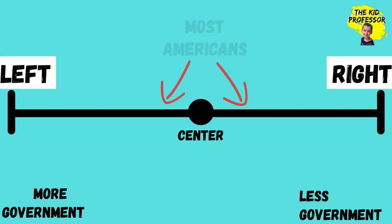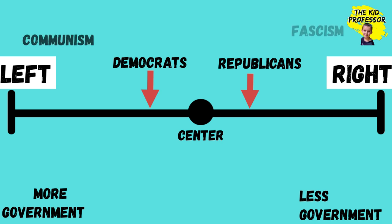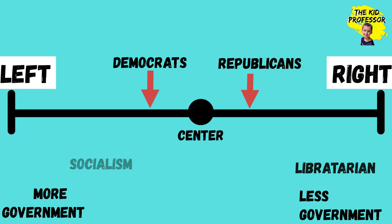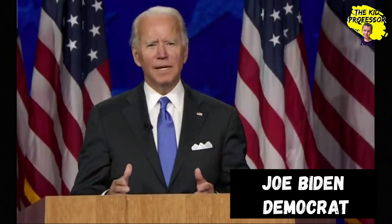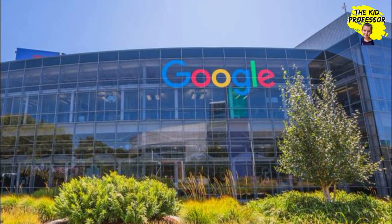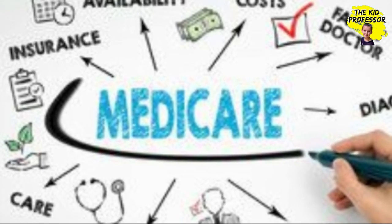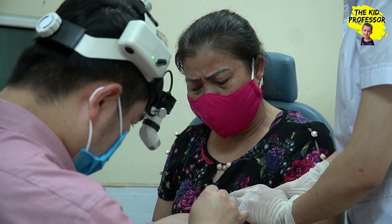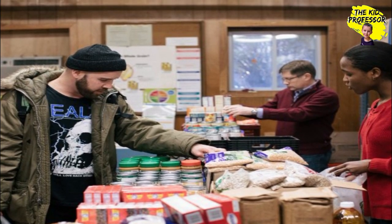Traditionally, Democrats can be found just to the left of center and Republicans just to the right. There are many other political ideologies to the left of Democrats and right of Republicans, but they are often seen as too radical to win elections here — their ideologies too unbalanced to be effective. Democrats believe government should play a bigger role in helping Americans live their lives. They want more government regulations in business and would like the government to spend more money on social programs designed to ensure that the basic needs of the American population are met. Examples include Medicaid, the Supplemental Nutrition Assistance Program — better known as food stamps — and housing assistance.